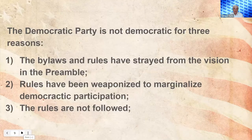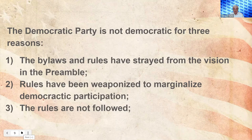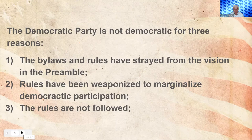There are three things that make the Democratic Party not democratic. First, the bylaws and rules have strayed from the vision and the preamble. Second, the rules have been weaponized to marginalize democratic participation. As we talk to more people from different states across the nation, we're finding a lot of consistency in how the rules have been weaponized — for example, the mute button in Zoom meetings has been used egregiously. A fundamental principle of democratic meetings is bi-directional oral communication so that you can assert your right to make an interrupting motion, which you cannot do if someone is illegally muting you.